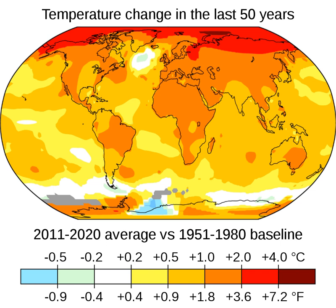Attribution of recent climate change shows that the main driver is elevated greenhouse gases, but that aerosols also have a strong effect. The Earth absorbs sunlight, then radiates it as heat. Greenhouse gases in the atmosphere absorb and re-emit infrared radiation, slowing the rate at which it can pass through the atmosphere and escape into space. Before the Industrial Revolution, naturally occurring amounts of greenhouse gases caused the air near the surface to be about 33 degrees Celsius warmer than it would have been in their absence.